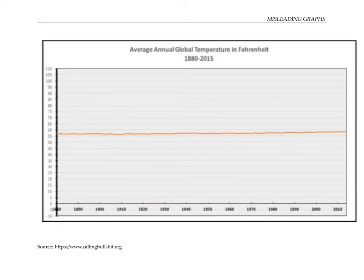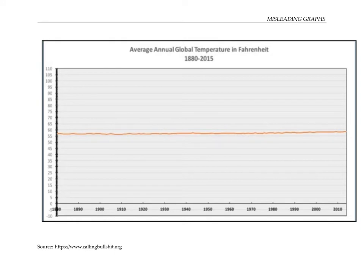On this slide, we have a line graph showing the average annual global temperature in Fahrenheit from 1880 through 2015. Why might this representation not be the best way to show this information? In this case, the scale on the y-axis is so big compared to the scale of the data represented that it's very hard to see the trend, let alone any fluctuations within that trend.